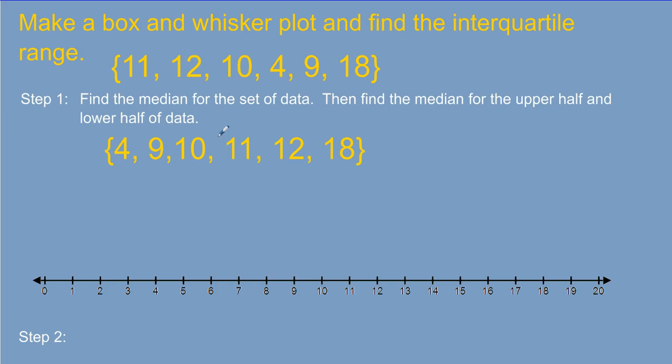Let's take a look at a practice problem. Make a box and whisker plot and find the interquartile range. The first thing we want to do is find the median for the set of data. So I'm going to stop right here, find the median for the set of data. So I've put my numbers in order from least to greatest for this data set. Now, to find the median, I'm looking for the middle number. I'm going to slash off the lowest number and the highest number, and I'm going to keep doing that until I get to the middle number.